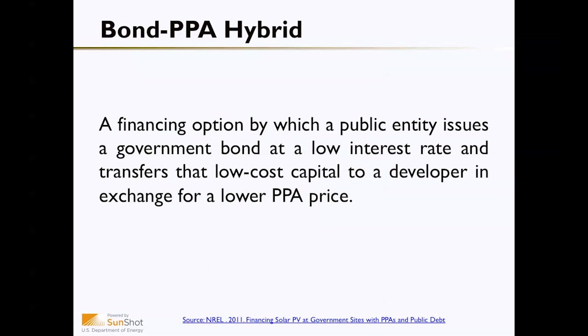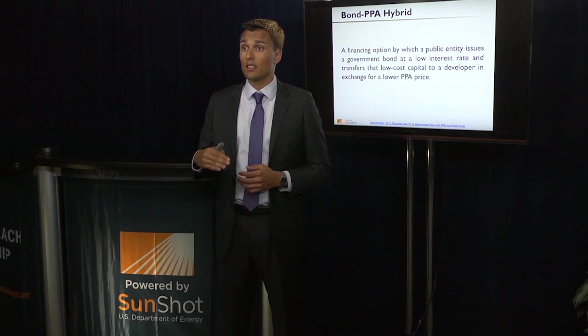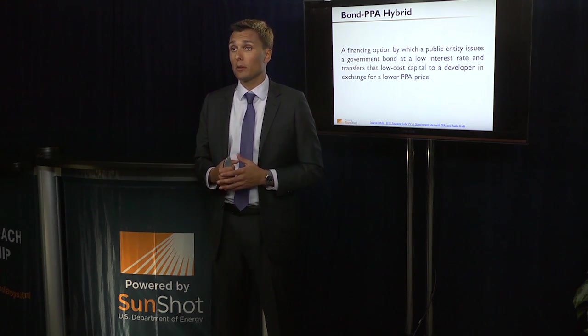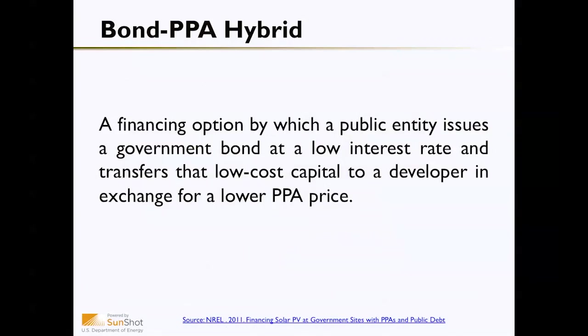I mentioned that local governments through the third-party ownership structure traditionally can't use cheap bond money. However, there have been cases through the bond PPA hybrid structure where they can utilize the third-party ownership benefits — a developer being able to take those tax credits and build those credits into the value of the power purchase agreement — while still using cheap, available bond capital to invest in the project. The bond PPA hybrid is a financing option by which a public entity issues a government bond at a low interest rate and transfers the low cost of capital to the developer in exchange for a lower power purchase agreement price.